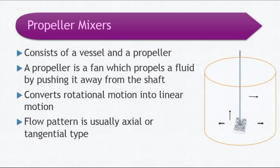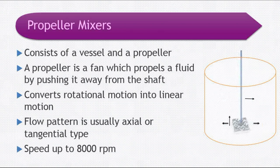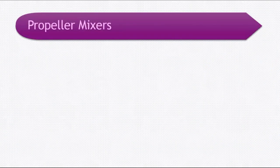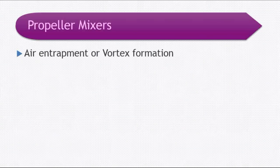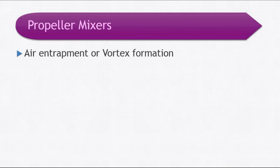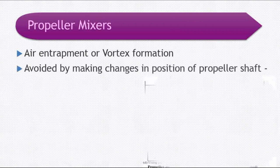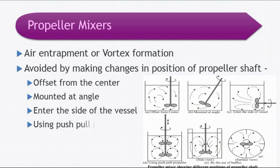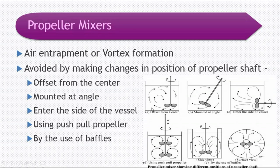The flow pattern in propeller mixers is usually axial or tangential. It typically operates at a speed of 8000 rpm. In the animation you can see how the movement is produced by a propeller. During mixing of liquids, there is a problem when using a propeller: air can get entrapped in the liquid, or there is formation of a vortex. These problems can be avoided by making some changes in the position of the propeller shaft.